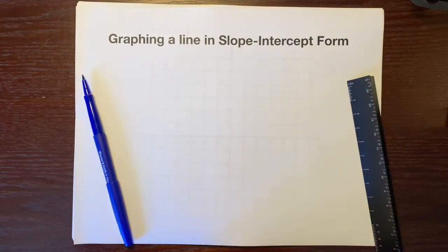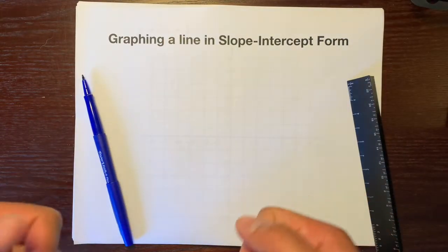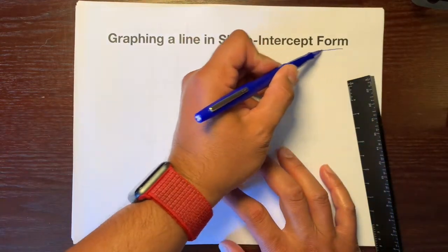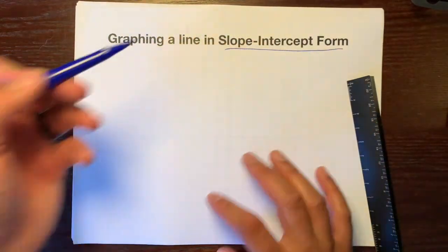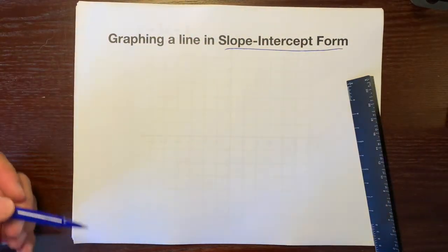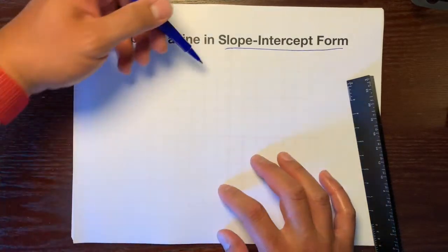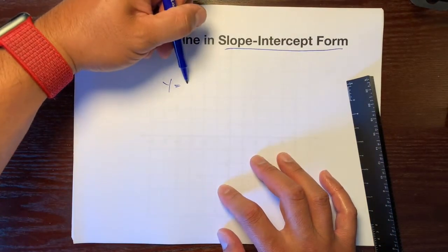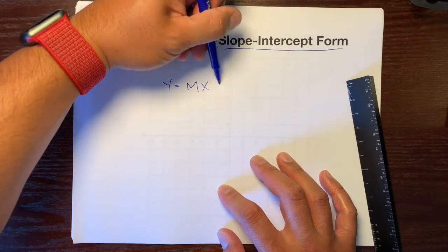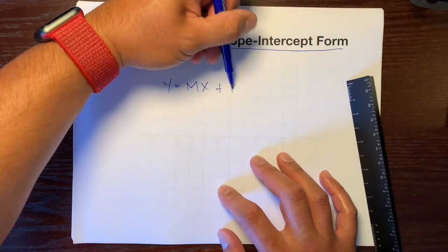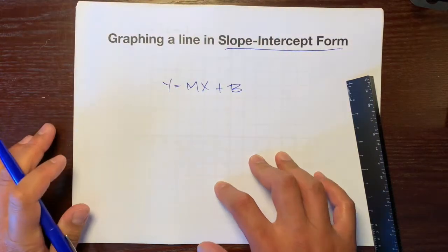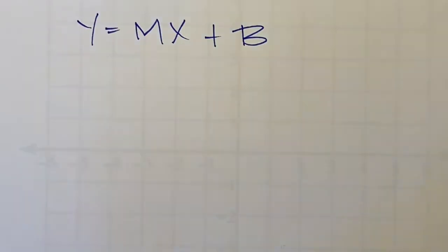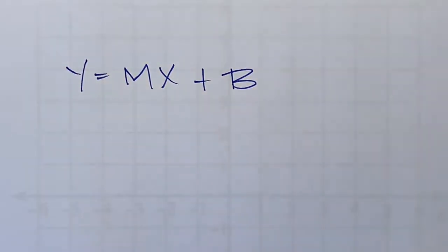Hello, this is Mr. Kinyanola, and I'm going to show you how to graph a line using slope-intercept form. So, what is slope-intercept form? It is four letters: Y equals MX plus B. This is slope-intercept form. Let's go over what each of these variables represents.